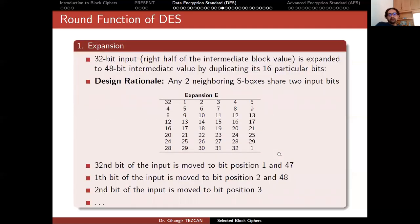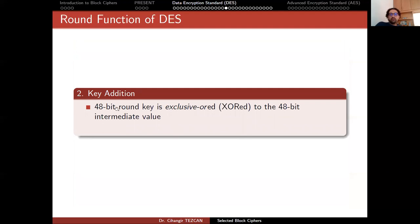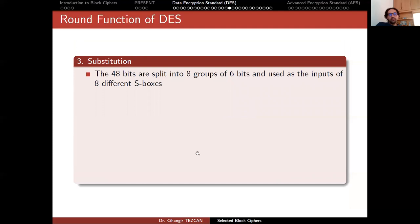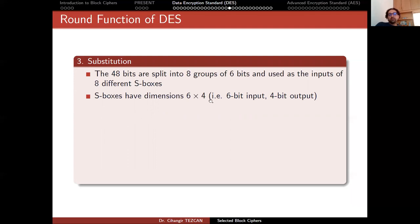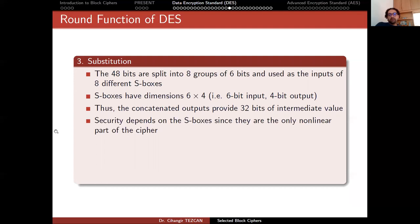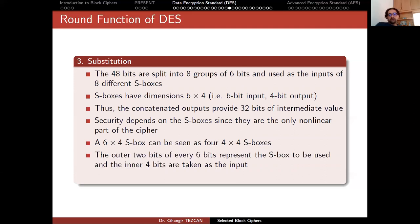Now that you have 48 bits, the next step is to XOR the 48-bit intermediate value with the round key. Round keys are generated by the key schedule algorithm we have already seen. Then we move on to the substitution layer, which is actually where the security of the cipher comes from. The 48 bits are split into eight groups of 6 bits and used as inputs to eight different S-boxes. S-boxes have dimensions 6×4, so their input is 6 bits and the output is 4 bits.